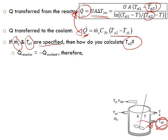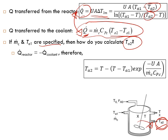We solve for TA2 by equating the two equations, yielding a useful closed-form expression for TA2. This gives us a third or fourth useful equation for CSTR design with heat effects.